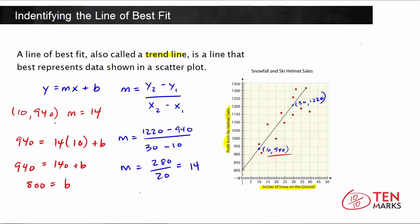We can write this as one large equation, given that we know both the slope and y-intercept now. The trend line is represented by the equation y = 14x + 800.